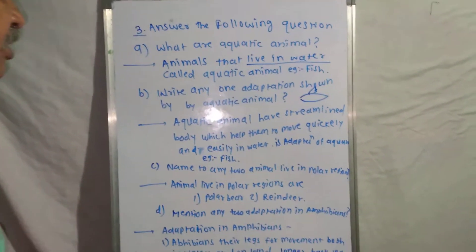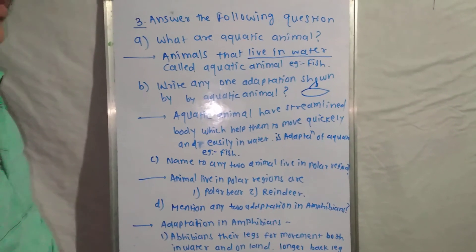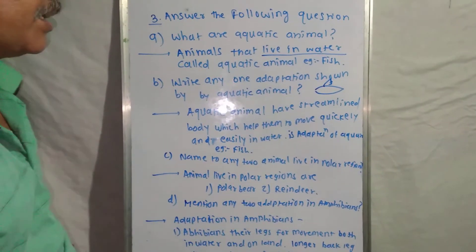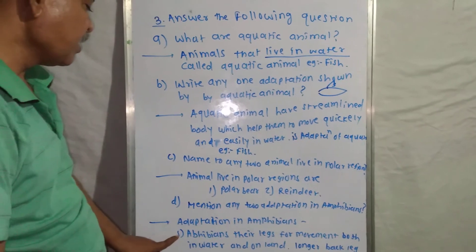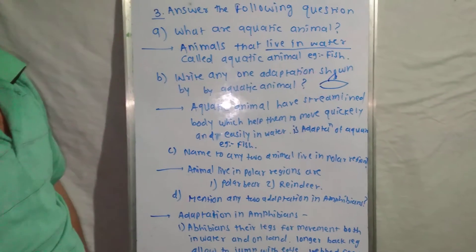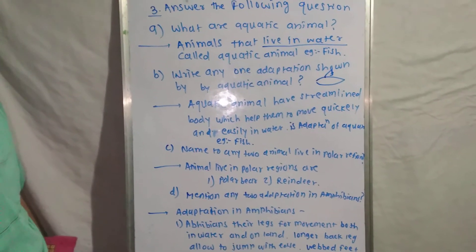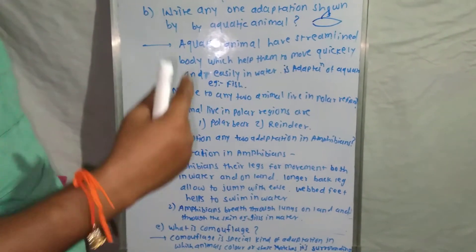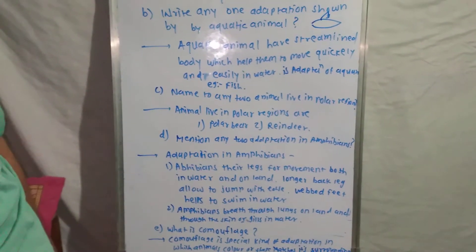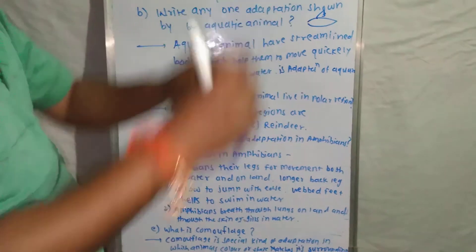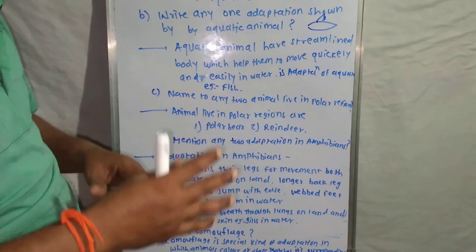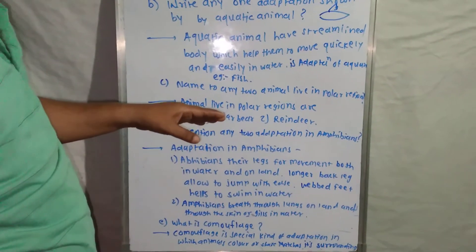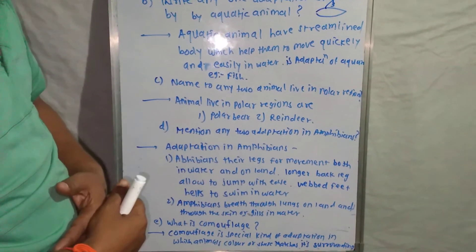The fourth question: 'Mention two adaptations in amphibians.' Amphibians are animals that live on both land and in water. The first adaptation is that amphibians have legs to make movements in water as well as on land. The longer back legs of the frog help it to jump on the ground — legs are very useful for amphibians.